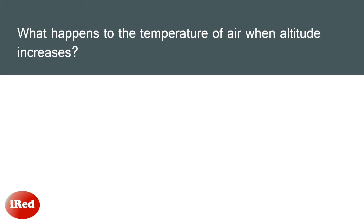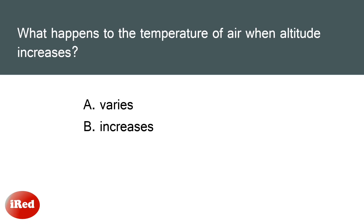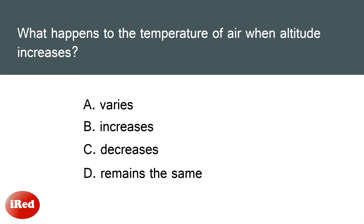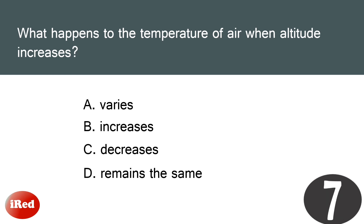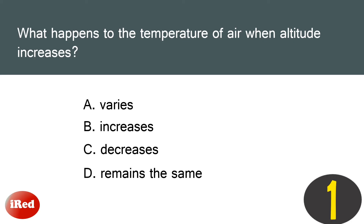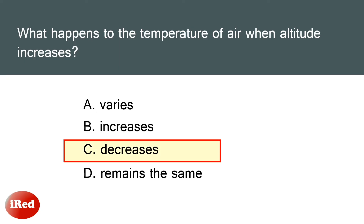Next question: What happens to the temperature of air when altitude increases? A) Varies, B) Increases, C) Decreases, or D) Remains the same. The answer is letter C — decreases.